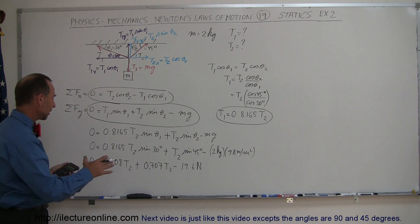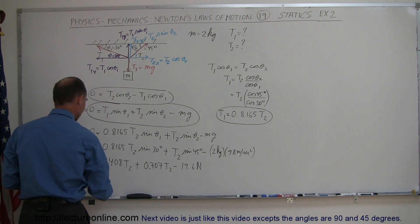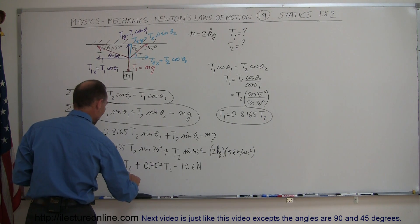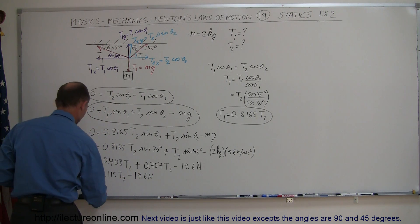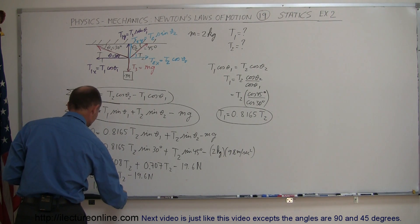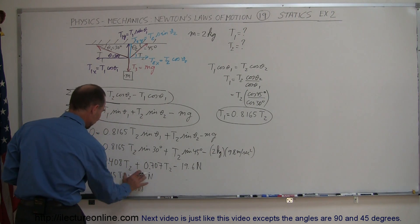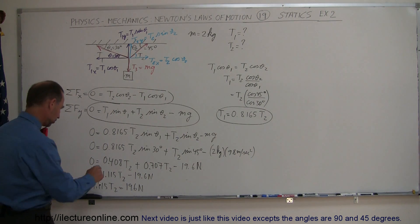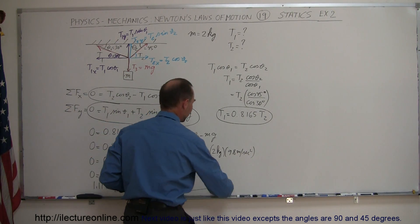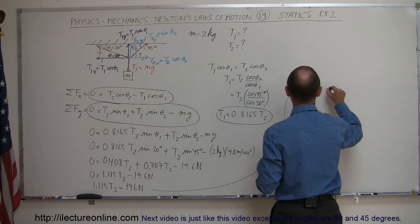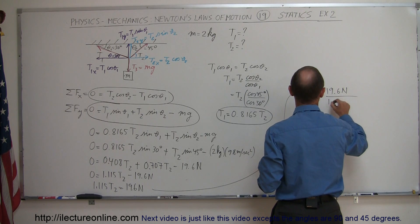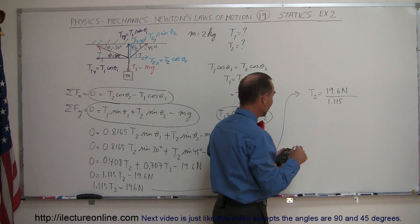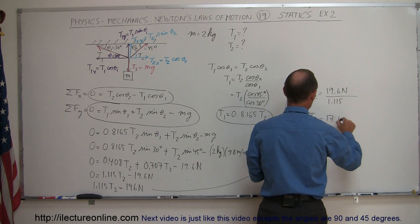Combining those two T2 terms, we get 0 equals 1.115 T2 minus 19.6 newtons. Solving for T2, we move 19.6 to the other side: 1.115 T2 equals 19.6 newtons, then divide both sides by 1.115. So T2 equals 19.6 divided by 1.115, which gives T2 equal to 17.6 newtons.